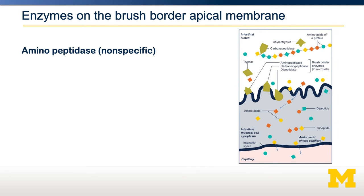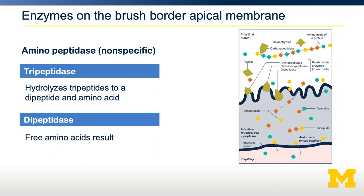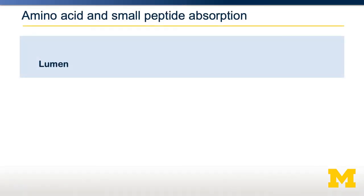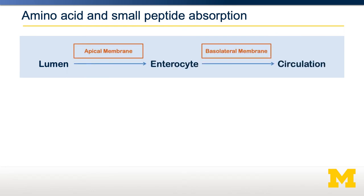Most of the digestion of proteins occurs in the small intestine, specifically near the brush border of the apical membrane of the enterocyte. The products of most enzymatic reactions involve the generation of tripeptides and dipeptides — chemicals with either two or three amino acids together. Amino acids can be absorbed into the enterocyte in all three of these forms: free amino acids, dipeptides, or tripeptides. There are two steps to absorption: transport from the lumen into the enterocyte across the apical membrane, and then transport across the basolateral membrane into circulation.